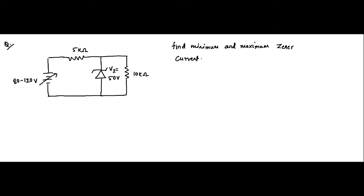Hello friends, this is another question on Zener diode. Here we have a Zener diode circuit where the input voltage is variable, ranging from 80 volt to 120 volt. The load resistance is fixed at 10 kilo ohm. So this circuit is a variable input, fixed load type.